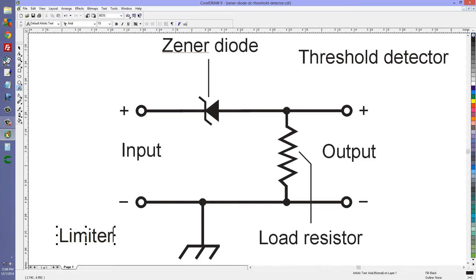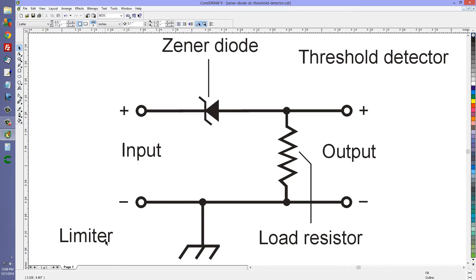Well, for one thing the resistor and the Zener diode have switched places. So instead of having the Zener diode connected in parallel and the resistor in series to limit the current, we have the Zener diode connected in series and the resistor is there to ensure that the Zener diode sees a load — even if the load is disconnected — because if the Zener diode doesn't see any load at all it will not operate properly as a Zener diode.